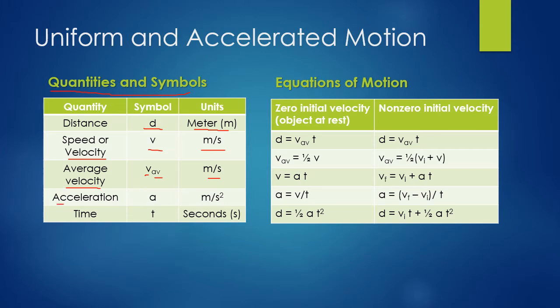Acceleration is the rate at which something speeds up or slows down, with units of meters per second squared. Time is represented by the variable T, and units must be in seconds. The equations are just a combination of all those symbols.